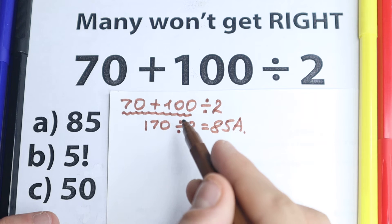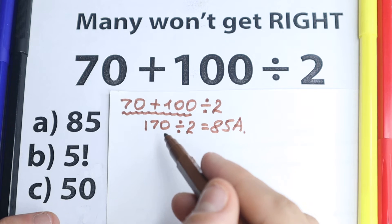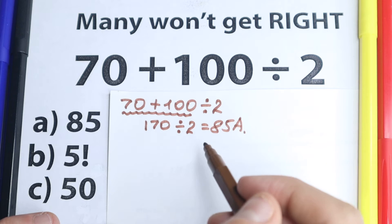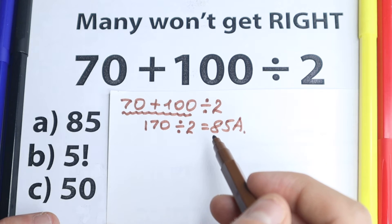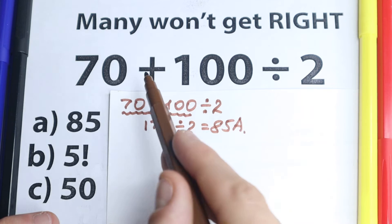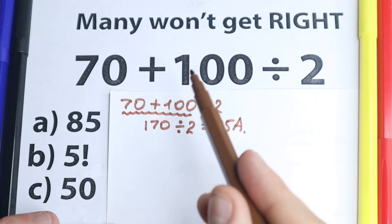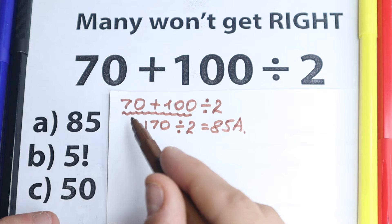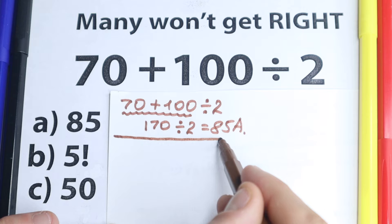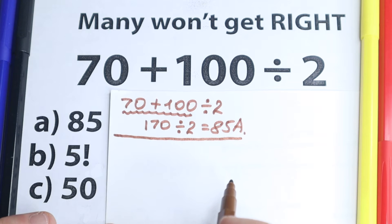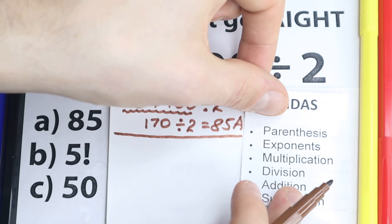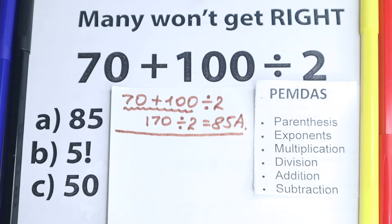Right now I won't say yet whether that is correct or incorrect. You need to understand what is the correct order to do this problem, because whatever order of operation we select is going to create a different answer. We need to determine: addition then division, or division then addition? Only two cases. Let's look at this from another perspective.